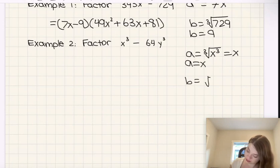And then the cube root of 64y cubed is going to be 4y.